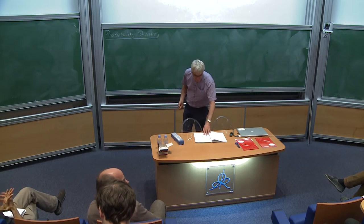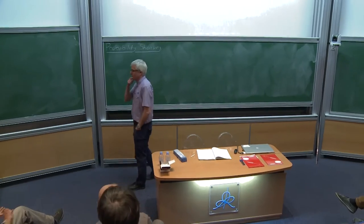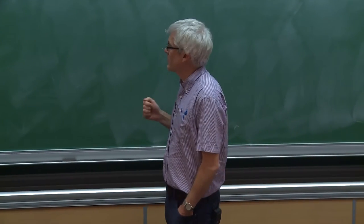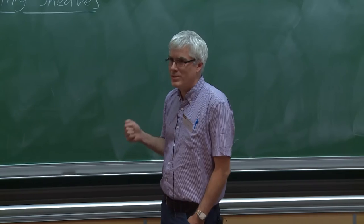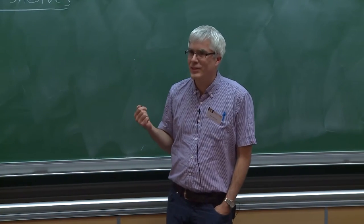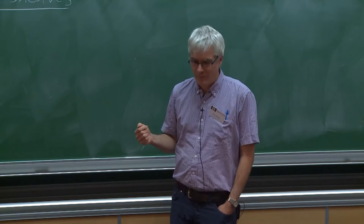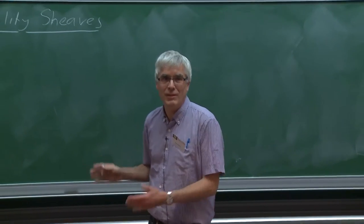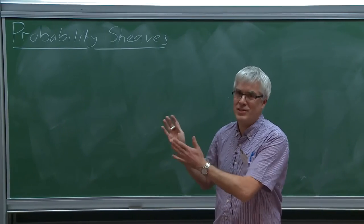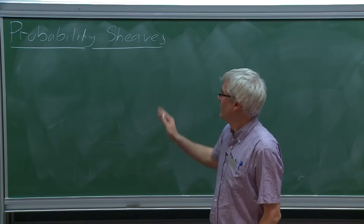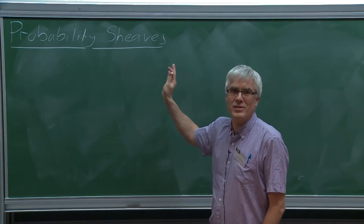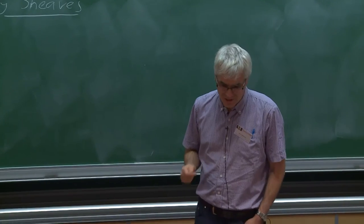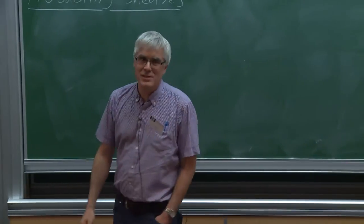What I'm going to talk about is essentially work stemming from an observation: that random variables as considered in probability theory naturally form a sheaf. Having made that observation, it's natural to look at that sheaf within the context of a category of probability sheaves and see what other constructions exist there and what they have to do with probability theory.